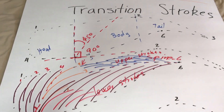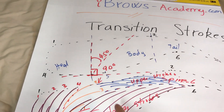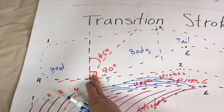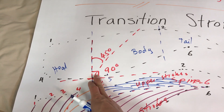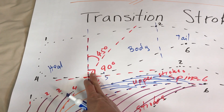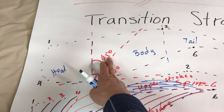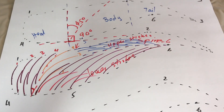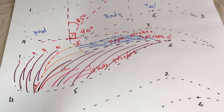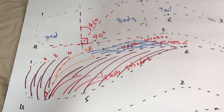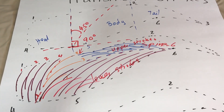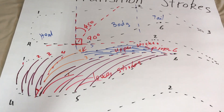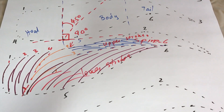So the concept is: the upper strokes have to have some angle, some inclination, a mathematical angle to it, so that it looks nice.